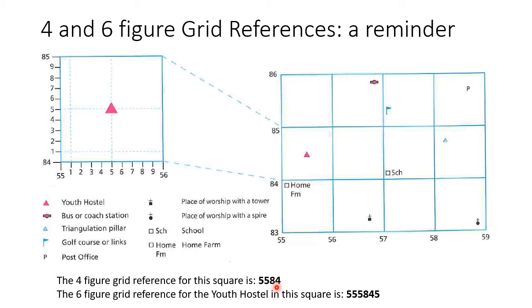You've just got to remember along the corridor, up the stairs. There's a way of checking as well, which is the point where those two lines meet and intersect. So here's 55, here's 84. This point will always be at the bottom left of the square you're looking for. If it turns out to be any other corner, you are incorrect — it always has to be bottom left. So that's how you can double check you've got the correct grid square.